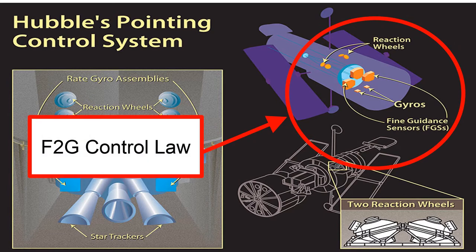Hubble has an F2G control law, where F represents the fine guidance sensors, and the 2G represents the two gyros.